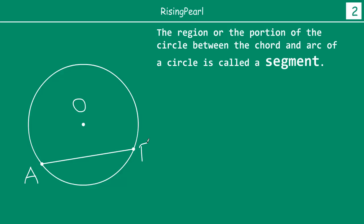Now, what if we draw a chord? A chord is a straight line joining any two points on the circle. So if we join the two points A and B by a chord, the region or portion of the circle between the chord and the arc is called a segment. Since we have two arcs, there are two segments.